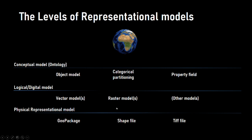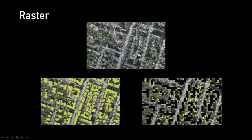Raster, like vector, is a logical or digital model — a way of taking a concept and making it manageable by a computer. The typical process of vector data starts with an aerial photograph, which is itself raster data. Someone then traces that raster data and digitizes it — in this case into buildings. These buildings as vector can then be converted back into raster. This conversion from vector to raster, although relatively simple, has many subtleties that I will cover in another video.